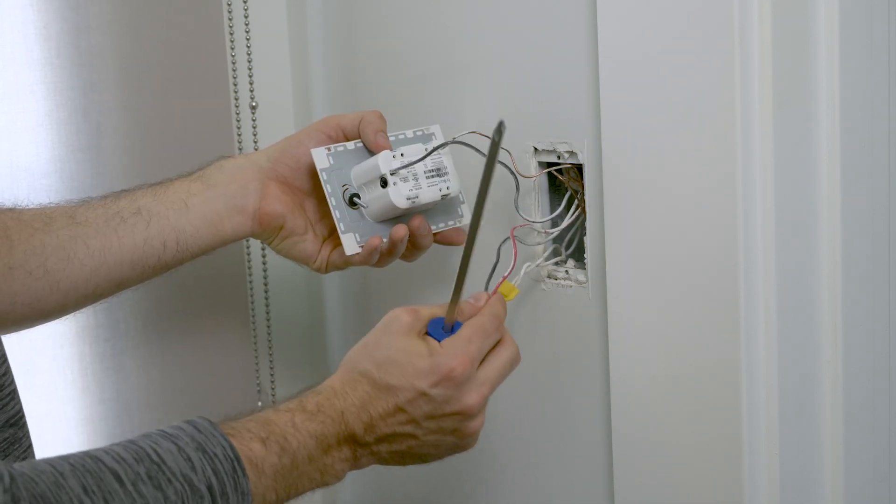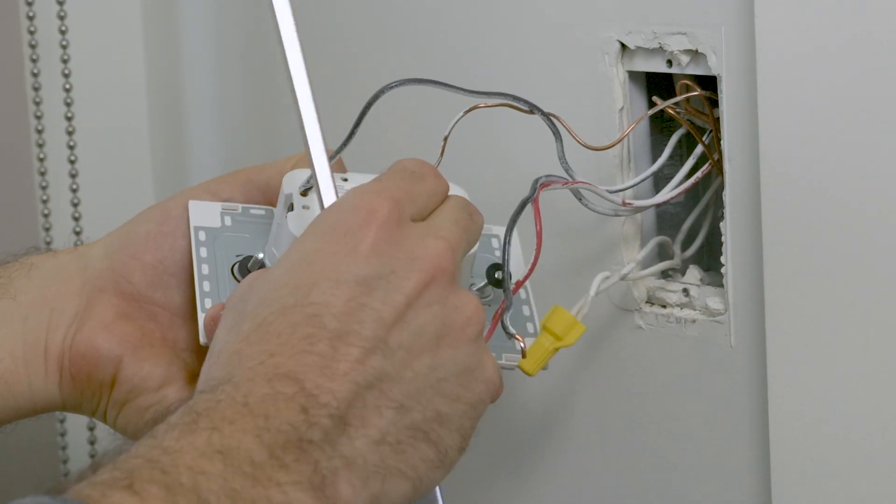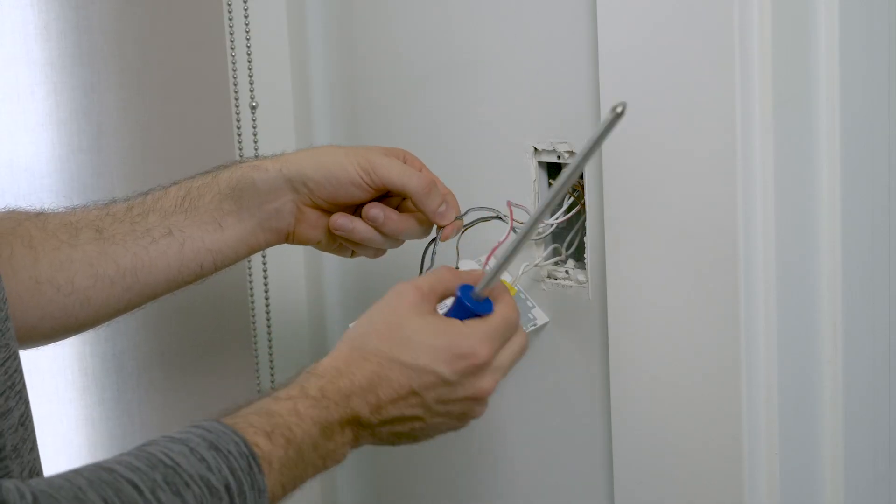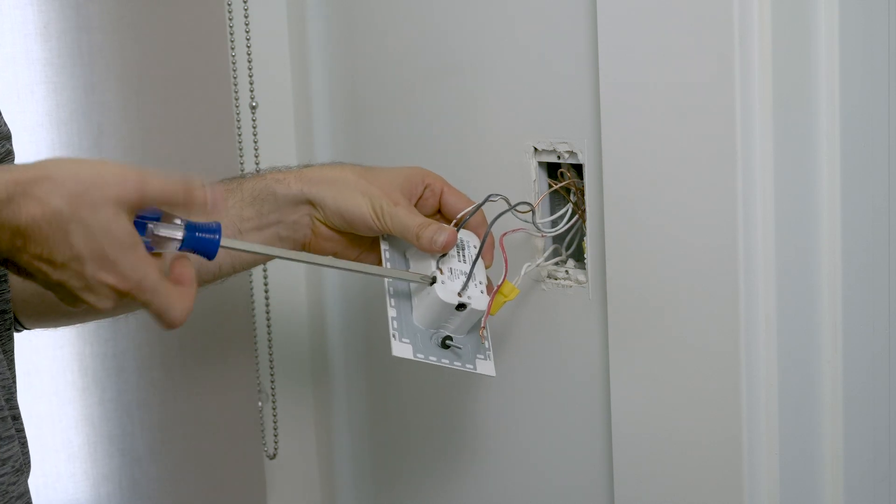After the common wire, you'll take your traveler wires, which are in the same sheath. Because this is a multi-way installation, you'll be removing the three-way circuit sticker. Insert the two traveler wires. Order does not matter because Brilliant automatically senses which is which.